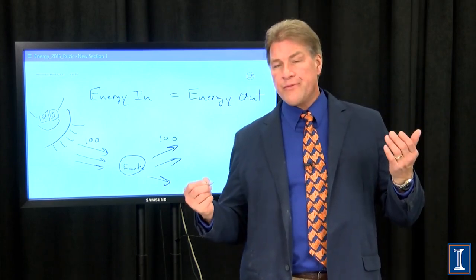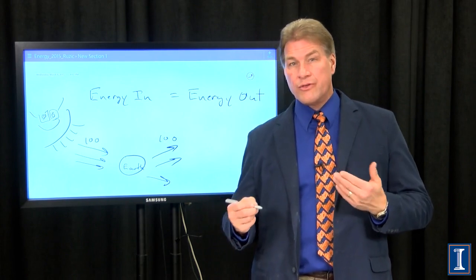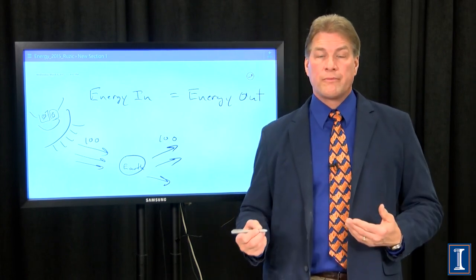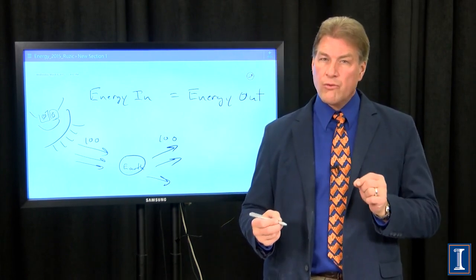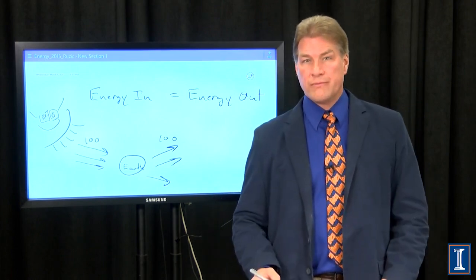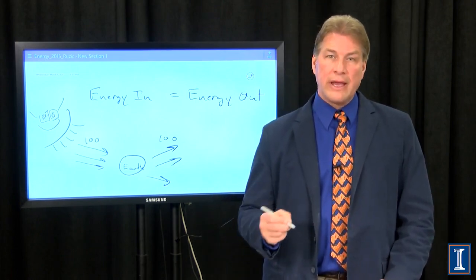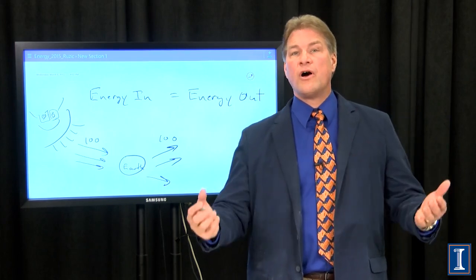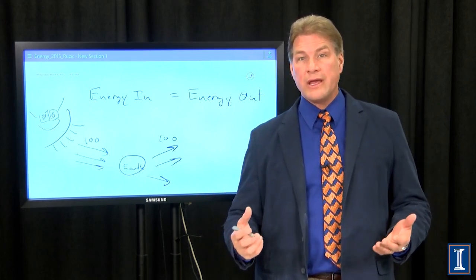You see, if there was more energy into the Earth than out, the Earth would get warmer. And if the Earth got a little warmer, it would radiate more energy. Everything radiates energy. Everything gives off electromagnetic radiation, light.